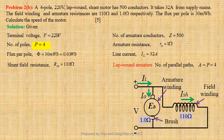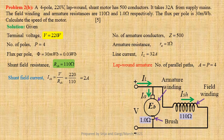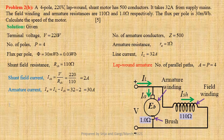Now we will find the shunt field current: ISH equals V divided by RSH, which gives 220 divided by 110, equals 2 Ampere. Next, we find the armature current: IA equals IL minus ISH, which gives 32 minus 2, equal to 30 Ampere. Back EMF EB equals V minus IA times RA, which gives 220 minus 30 into 1, equal to 190 volts.